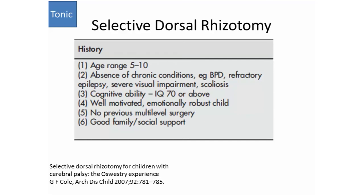Selected dorsal rhizotomy is a major modality I'll expand on. It directly addresses the tonic aspect of spasticity, and when it does so effectively, it also eventually addresses the phasic and rheological aspects. The Oswestry criteria define the right patient — biased towards children who can already walk. The ideal patient is five to ten years old: under five, they may not understand why the surgery is being done; over ten, they may get neuropathic pain. Other criteria include absence of chronic conditions, IQ better than 70, well-motivated, no prior surgeries, and good family support — because without therapy afterward, the surgery is a waste.